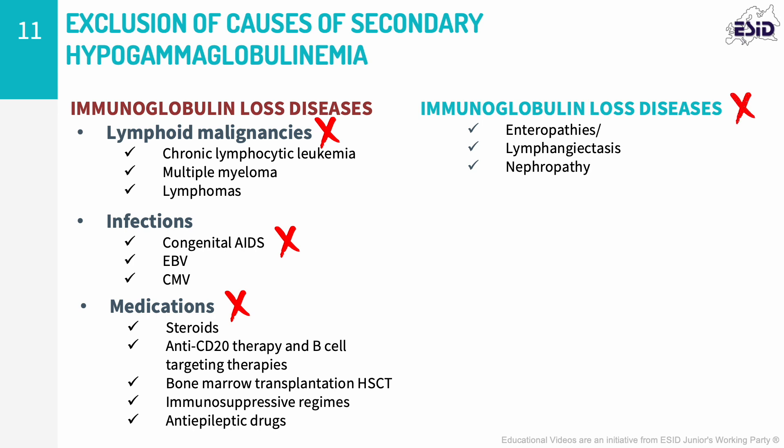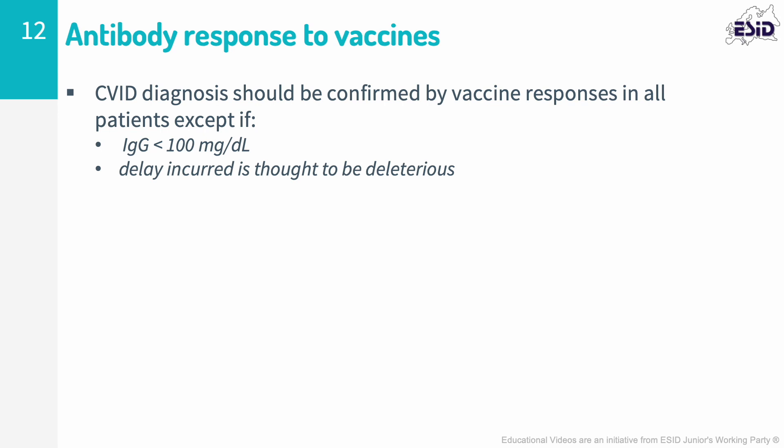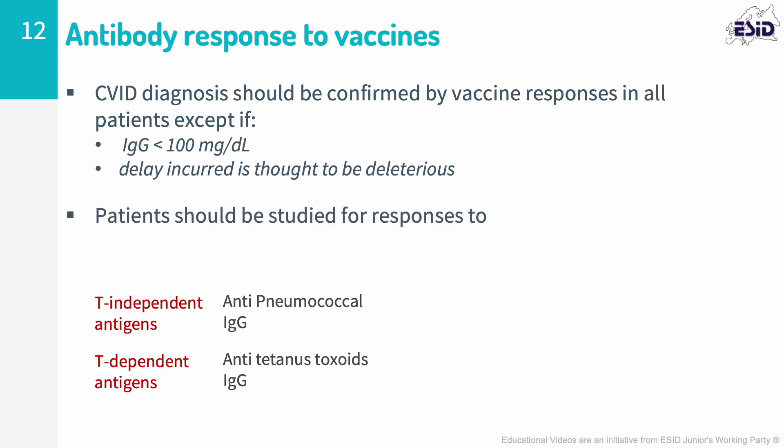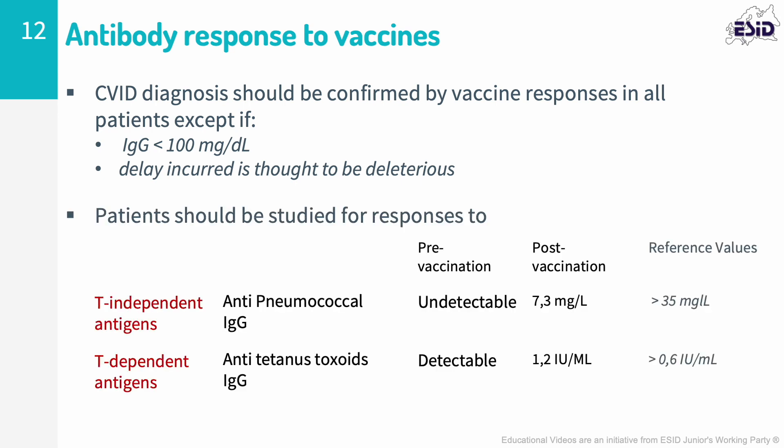However, exclusion of enteral loss can be very difficult. A diagnosis of CVID is confirmed by assessing vaccine responses in all but those with very low or undetectable IgG, or in cases where testing antibody levels pre- and four weeks post-vaccination may delay therapy and could be deleterious to the patient's health. In clinical practice, pneumococcal polysaccharide vaccines are the most commonly used to evaluate T-cell independent responses, while diphtheria and tetanus toxoid vaccines are used to assess T-cell dependent responses.